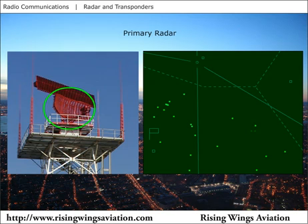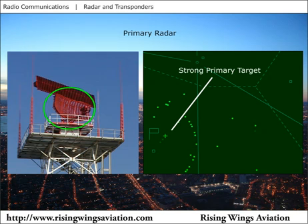The radar antenna moves in a circular sweep. The data from the radar is then fed into a computer for processing and displayed to the air traffic controller on a radar display. Primary radar may depict additional or erroneous information, such as ground clutter. Primary radar may also be blocked by terrain or affected by precipitation and other atmospheric conditions.